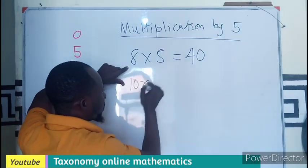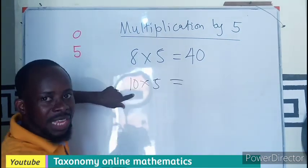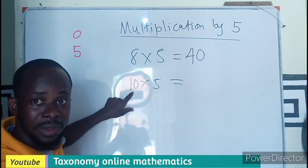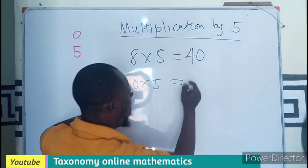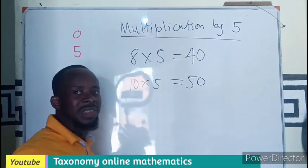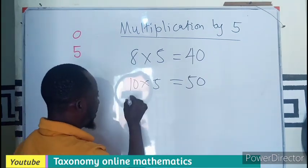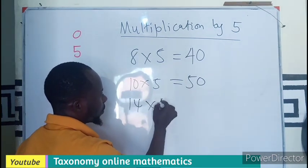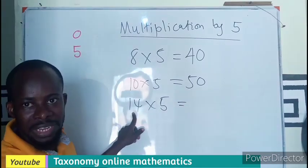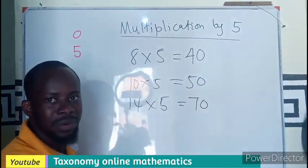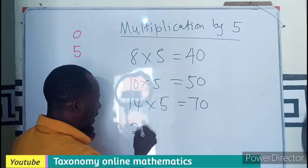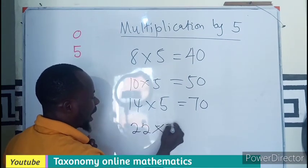Let's take 10. 10 is an even number, so the last number will be zero. Half of 10 is 5, so put the 5 down, add your zero. Let's go a step further. Let's say 14×5. What is half of this? That will be 7. Add zero.